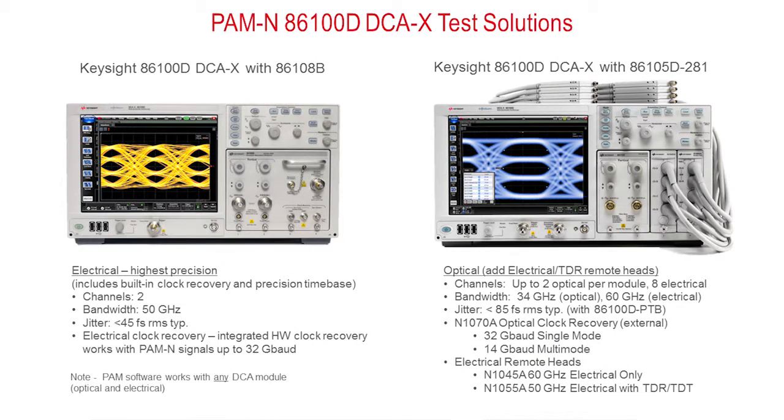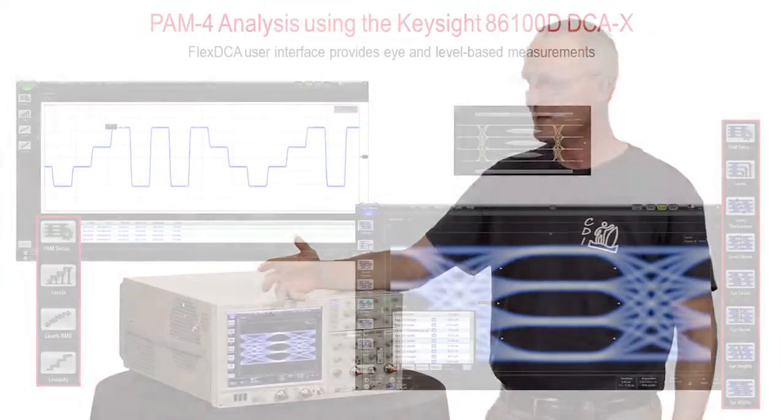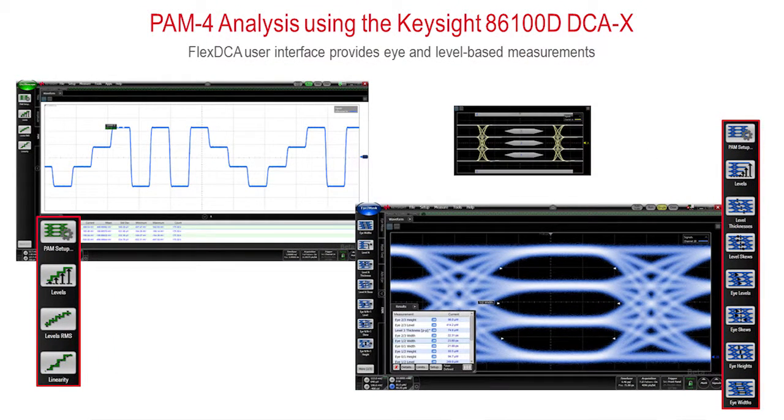Finally, in terms of making the analysis on the PAM-4 waveform, that's also quite simple. Essentially, what we have to do is give the DCA a sort of a slightly modified personality, a new measurement suite that is PAM-4 aware. And with PAM-4, there's essentially a license that we install, as well as a firmware upgrade, that gives it a new set of PAM-4 measurements.